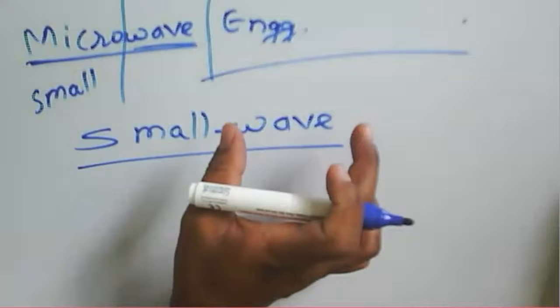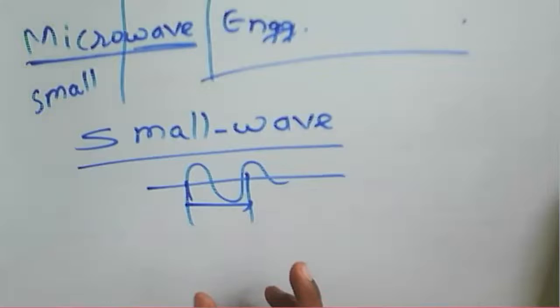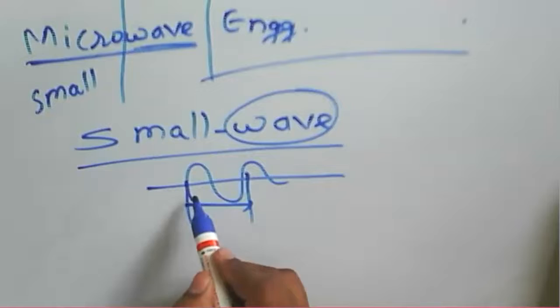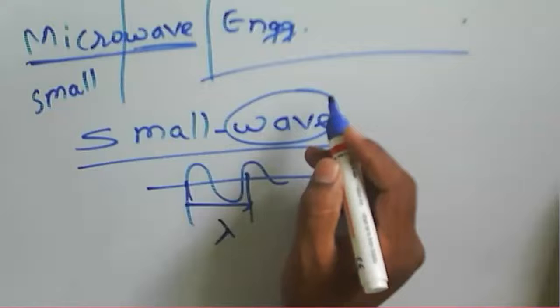A 'wave' is one complete period — a duration of 2π. So microwave means a small wave. Small wave means the frequency is high, but the wavelength — the length of that particular wave — is very small. So 'micro' refers to a very small wavelength, which is why lambda is very very small for microwave signals.